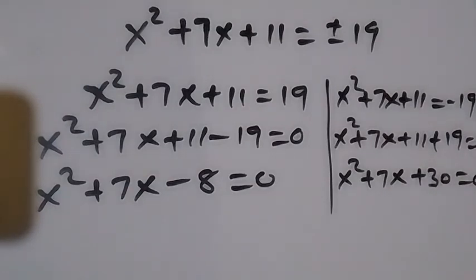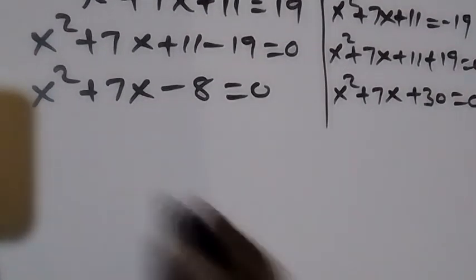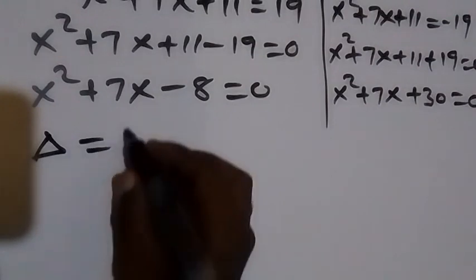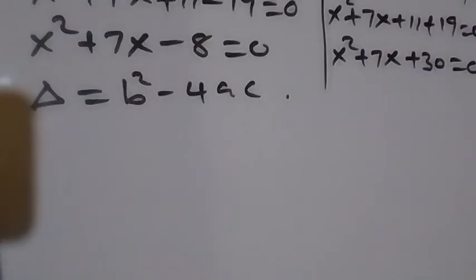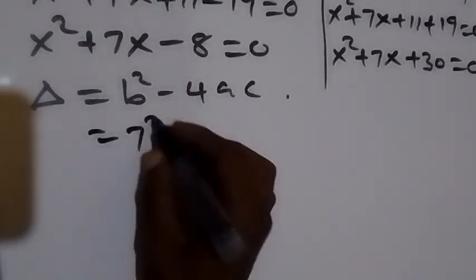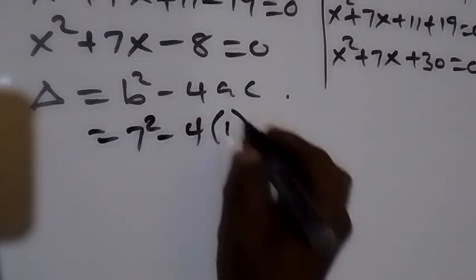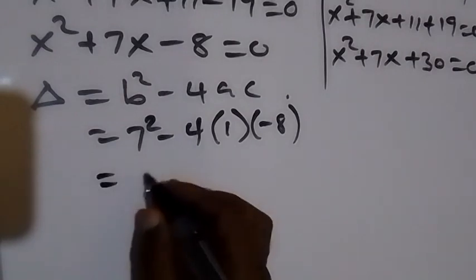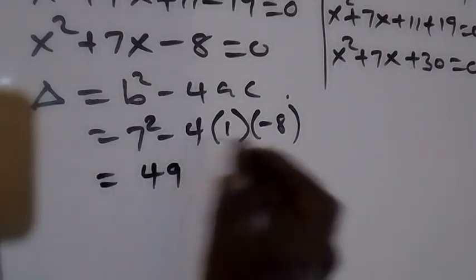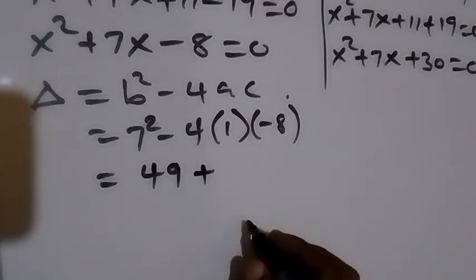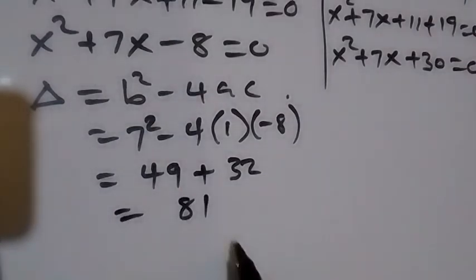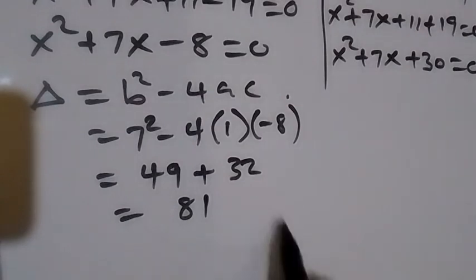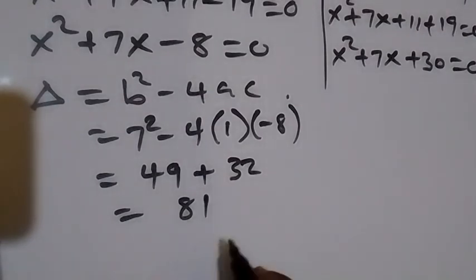We check whether Case 1 has real solutions using the discriminant b²−4ac. Here b=7, a=1, c=−8. So 7²−4(1)(−8) = 49+32 = 81. This is greater than 0, so there are real solutions. In fact, 81 is a perfect square, so we can factorize.